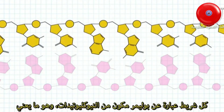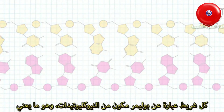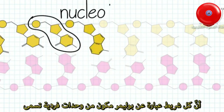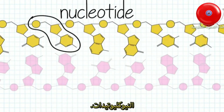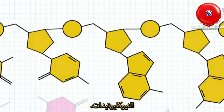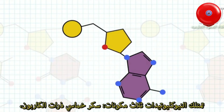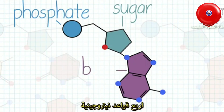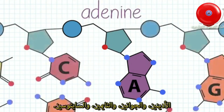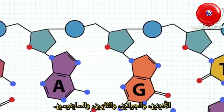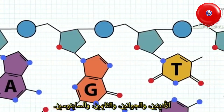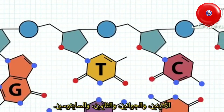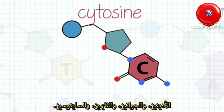Each strand is a polynucleotide, meaning the strand is made up of many individual units called nucleotides. A nucleotide has three components: the 5-carbon sugar, a phosphate group, and one of four possible nitrogenous bases — adenine, guanine, thymine, and cytosine.